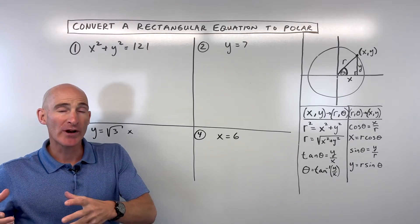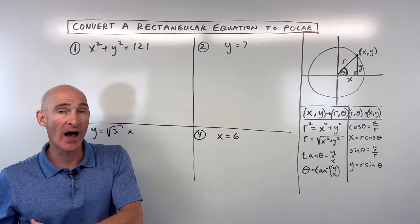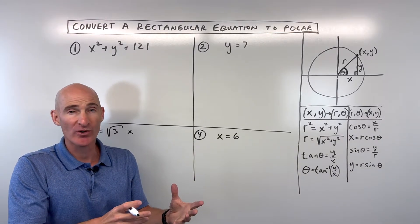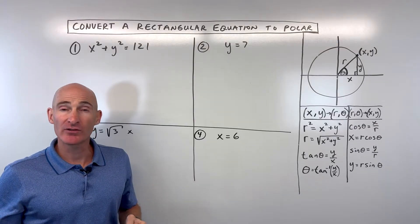In this video, you're going to learn how to convert from rectangular equations, equations in the form where there's an x and a y, to a polar equation where there's just an r and a theta. We're going to go through four examples together. Let's dive in.